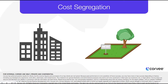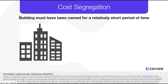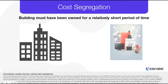For this strategy to be effective, the building must have been owned for a relatively short period of time. Real property is not expensed in the year that it is purchased. Instead, it is considered a long-term asset and is depreciated over its useful life — 27.5 years for residential real property and 39 years for commercial real property.